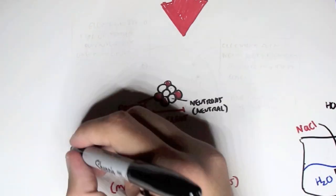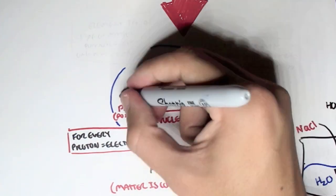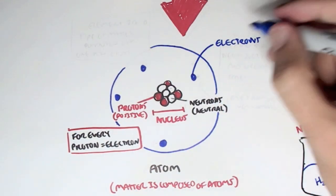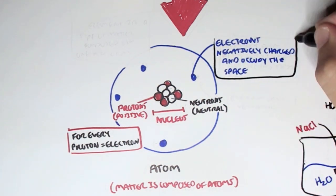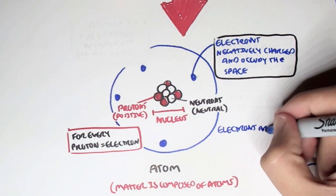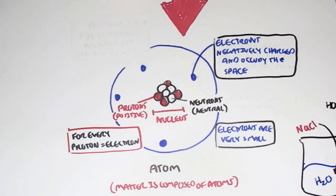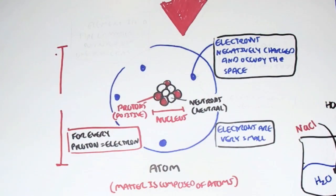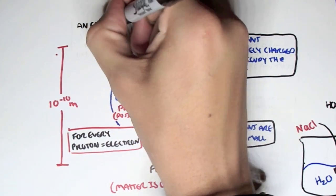Important thing to know is that usually, for every proton which is positively charged, we have an electron, and an electron is negatively charged. An electron actually surrounds the nucleus in a sort of space. Electrons are very, very, very small compared to the neutrons and the protons. So an atom is usually electrically neutral, because there are as many electrons as there are protons. The size of a typical atom is about 10 to the negative 10 meters, which is very, very small.